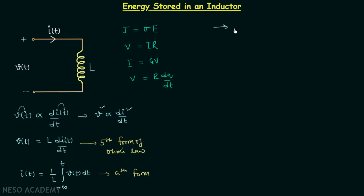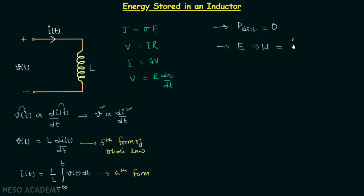We know that an inductor stores energy in the form of its magnetic field. When we have an ideal inductor, the power dissipated is equal to zero, and therefore the inductor will store the energy. We will calculate the total energy stored by an inductor. We know there is a close relation between energy and work — energy is the capacity of doing work. If you have some energy, you are promising that you will do some work in the future.